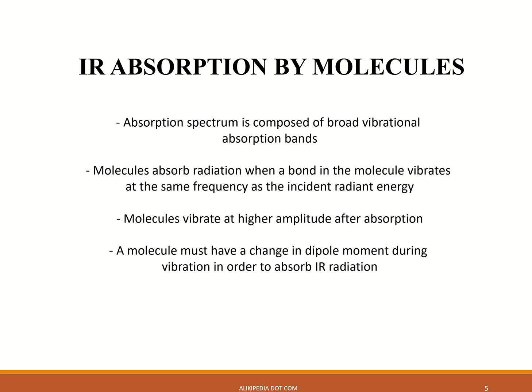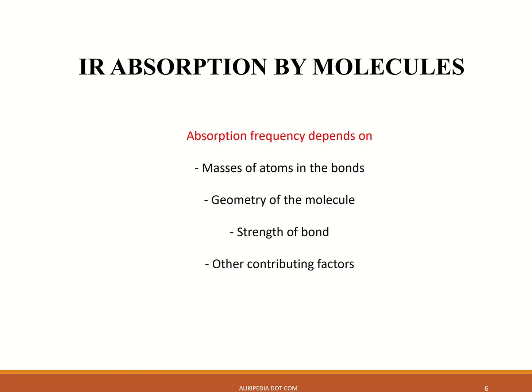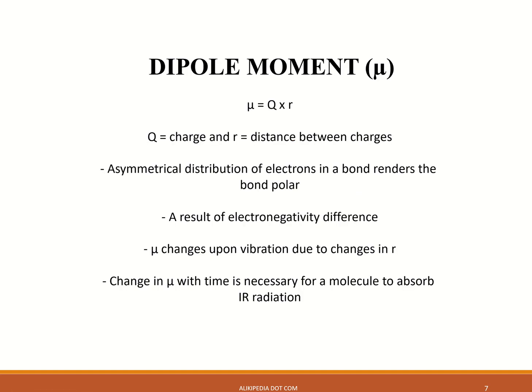Two compounds will never show similar IR spectra — this is very important. If two molecules have the same IR spectra, they are enantiomers. The absorption of the frequency of light depends upon: masses of atoms in the bonds, geometry of the molecule, and strength of the bond. These three are the main factors that IR absorption depends upon.